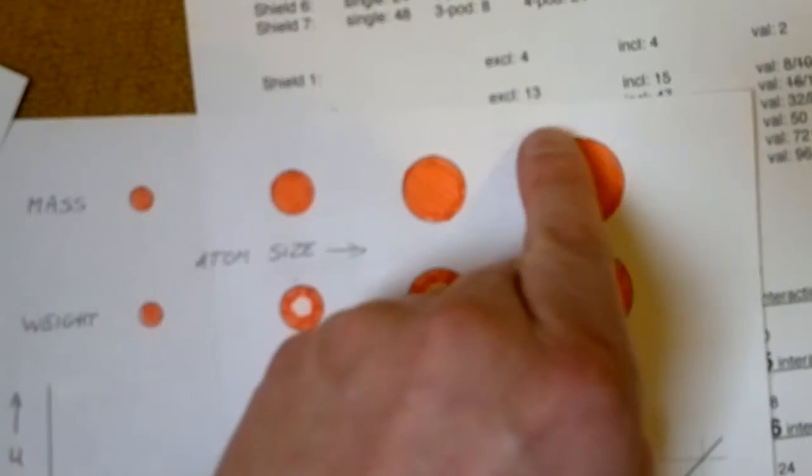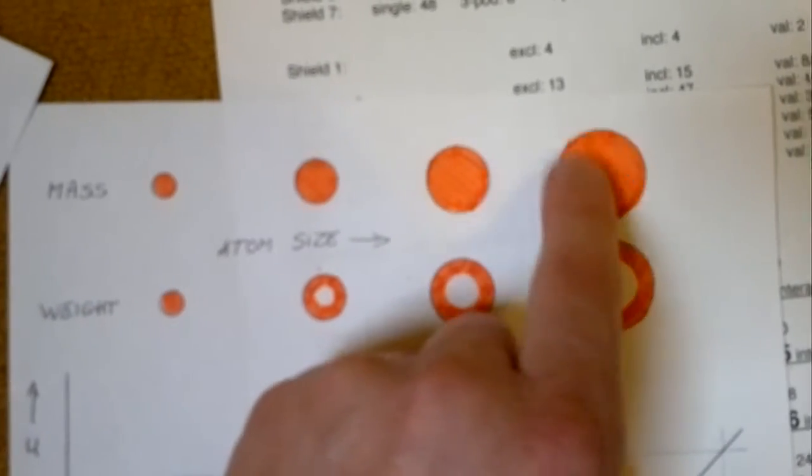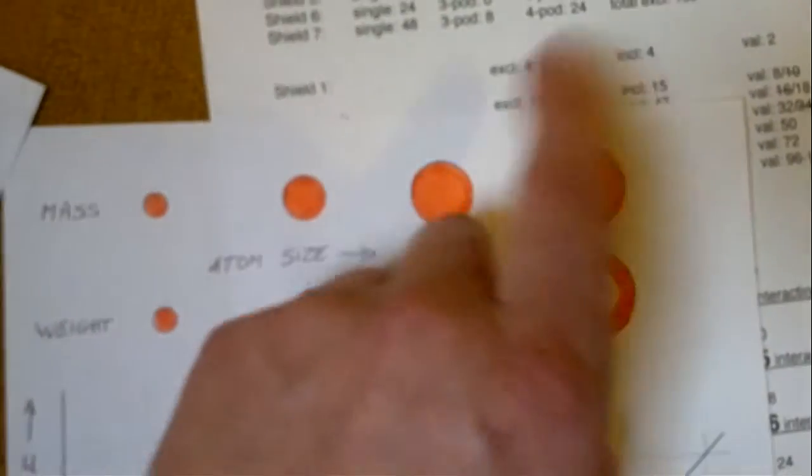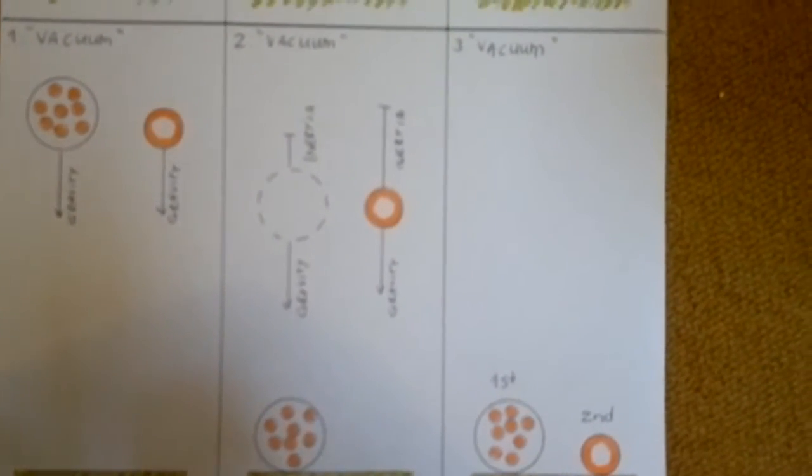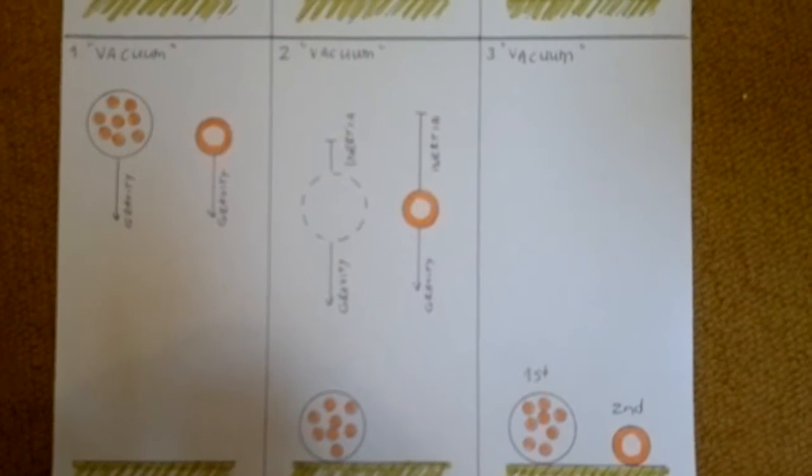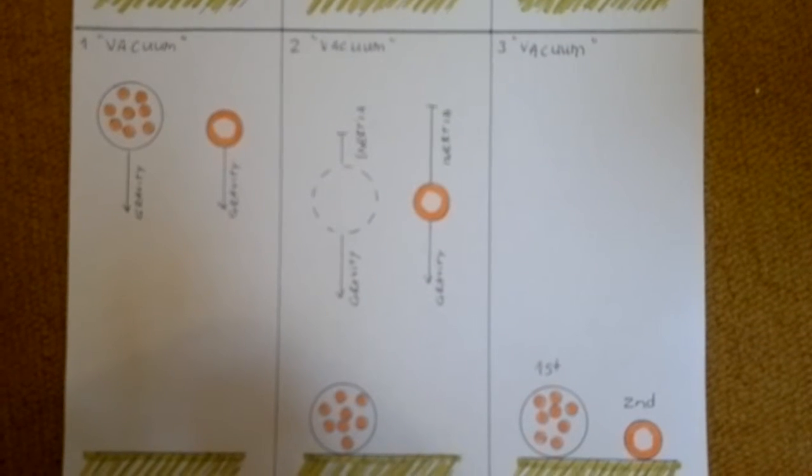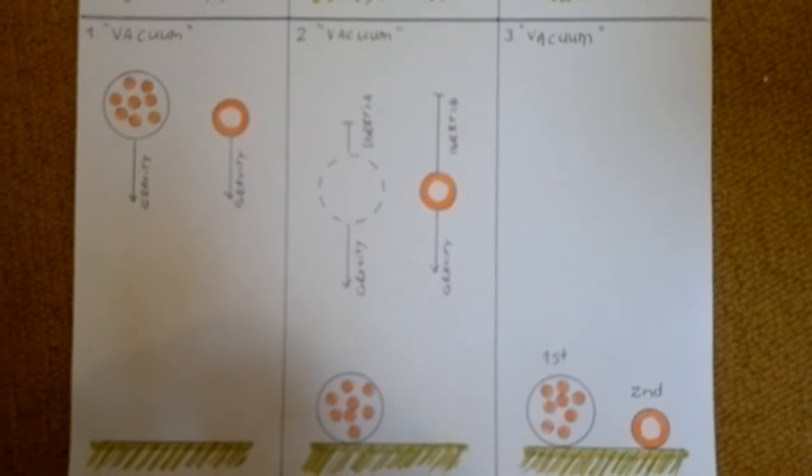But over here, inertia is far bigger compared to the weight. So there's more inertia compared to weight when it comes to bigger atoms. So I predict that a big, heavy atom will fall down slower than a very small atom in a vacuum.